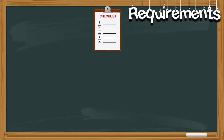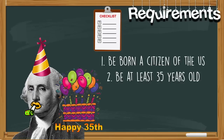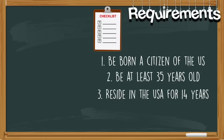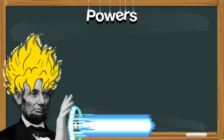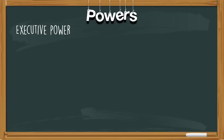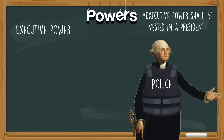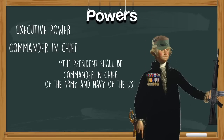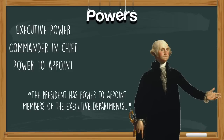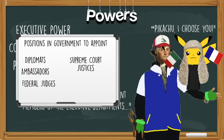Article 2 contains the requirements for being the president of the United States. Number one: you have to be born a citizen of the U.S. — you cannot become a naturalized citizen and be the president. Requirement number two is you must be at least 35 years old. Requirement number three: you must live in the United States for 14 years, and these don't need to be consecutive. The first power written in Article 2 is executive power — essentially he's the boss and has the power to enforce the law. The next power is commander-in-chief, meaning he commands the army and the navy of the United States. Up next is the power to appoint: the president has the power to appoint leadership positions in the federal government, including diplomats, ambassadors, federal judges, Supreme Court justices, and members of the executive departments.